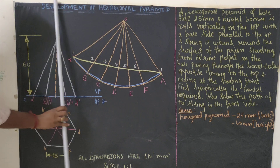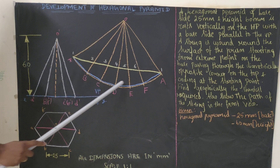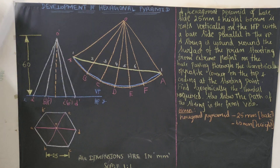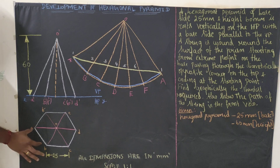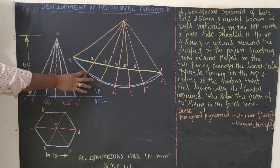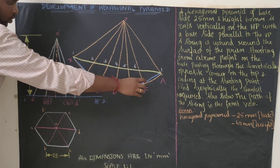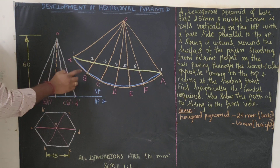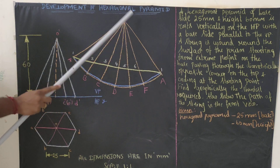O dash to D dash and O to A are the same distance. Draw a line, then take your compass, keep it at O, measure to A, and draw an arc. The end point is unknown, so we need to divide this arc into six equal parts since it is a hexagonal pyramid with six sides. Measure from A to B - 25 mm - and cut arcs at B, C, D, E, F consecutively at 25 mm each.